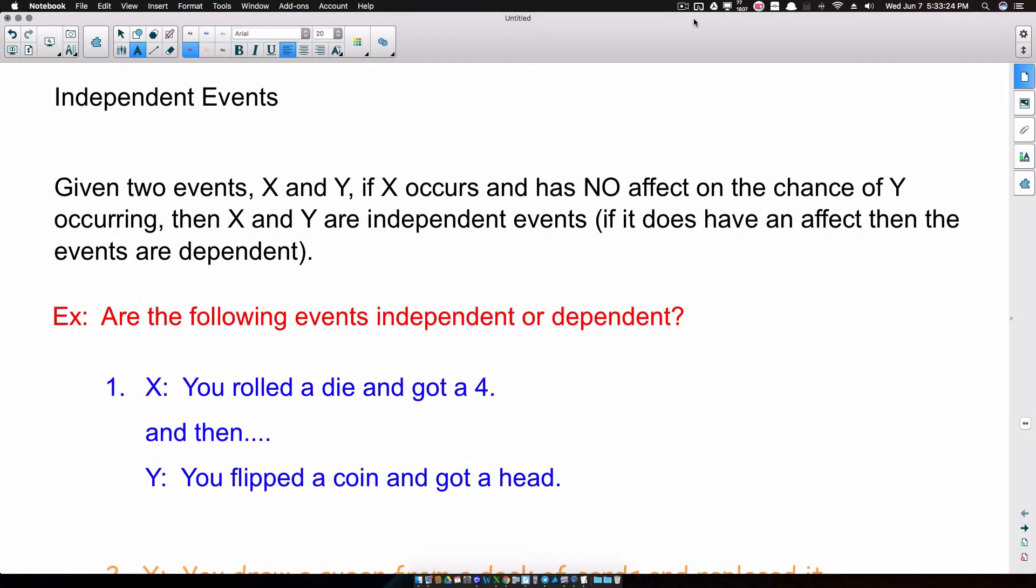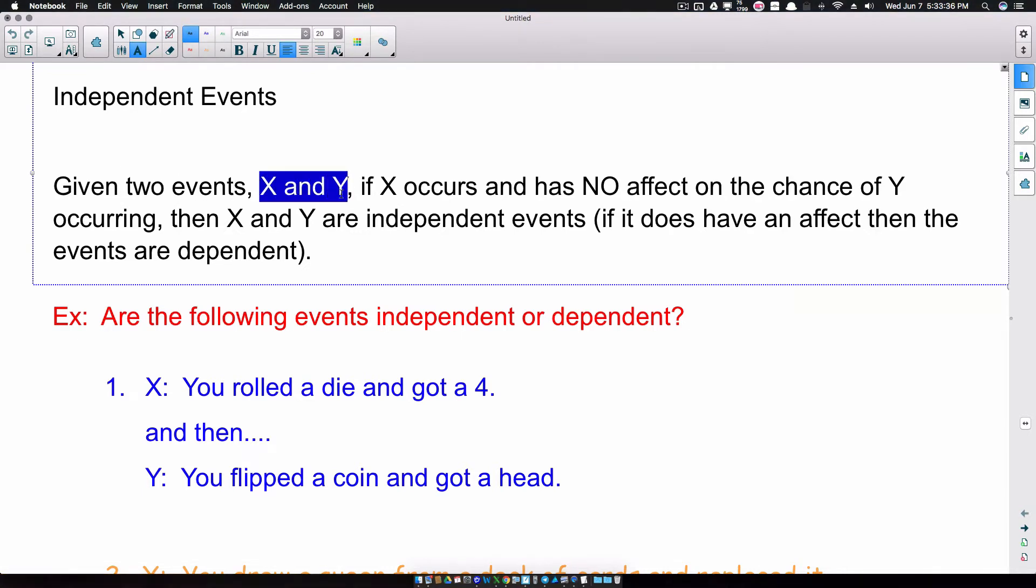All right, in this video we're going to talk about independent events real quick, just getting the idea of what independent events are before we dive into a lot of mathematics with probability. So what are independent events? You've got two events, we'll call them X and Y. And if X occurs and it has no effect on the chance of Y occurring, then we can say that X and Y are independent events.